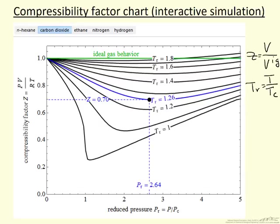The simulation shows a green line that corresponds to an ideal gas. So for an ideal gas the compressibility factor is 1.